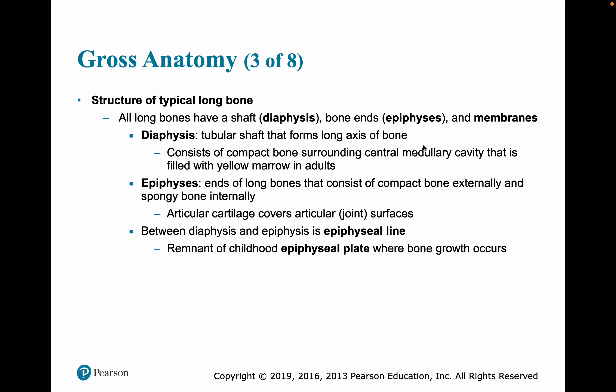A long bone is a little different. Long bones have a shaft called the diaphysis and ends called epiphyses. The diaphysis is a tubular shaft forming the long axis of the bone — it's compact bone surrounding a central medullary cavity, where marrow is found. In adults that's typically yellow marrow, although during development it may be red marrow.